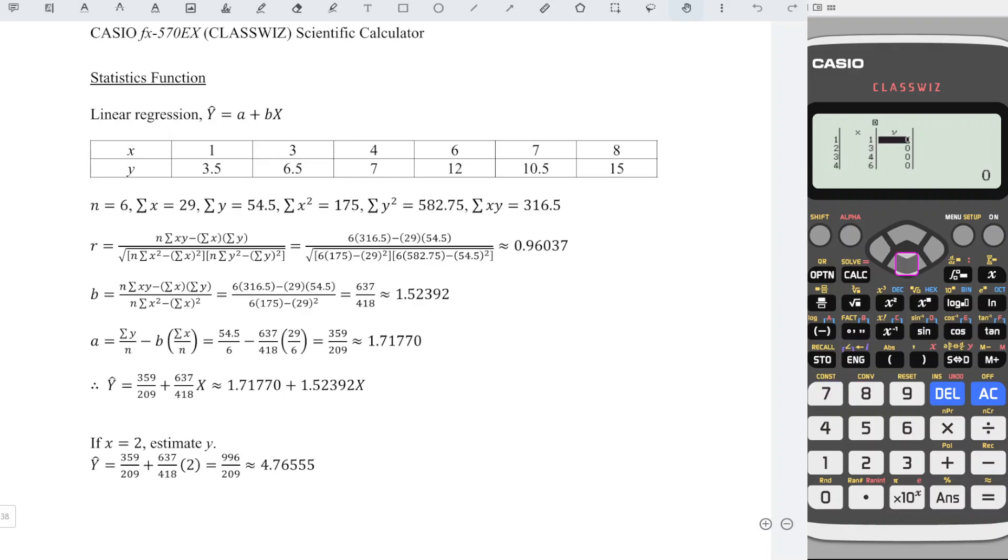Press right. Now, get back to the first row of y. Also, enter the values accordingly: 3.5, 6.5, 7, 12, 10.5, 15.